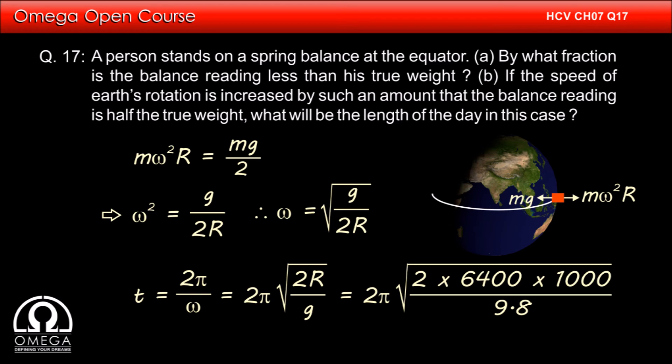Putting the values of radius of Earth and acceleration due to gravity, we get 2π × √(2 × 6400 × 1000 / 9.8), which on simplification gives 7155 seconds, i.e., 119 minutes and 15 seconds, or roughly 2 hours. This is our answer.